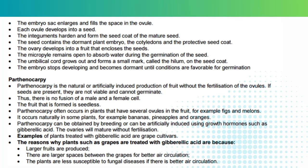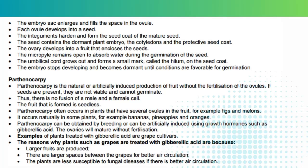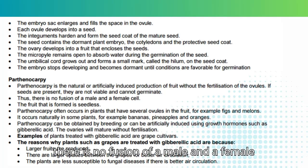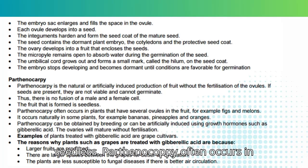Parthenocarpy is the natural or artificially induced production of fruit without the fertilization of the ovules. If seeds are present, they are not viable and cannot germinate. Thus, there is no fusion of a male and a female cell, and the fruit that is formed is seedless.